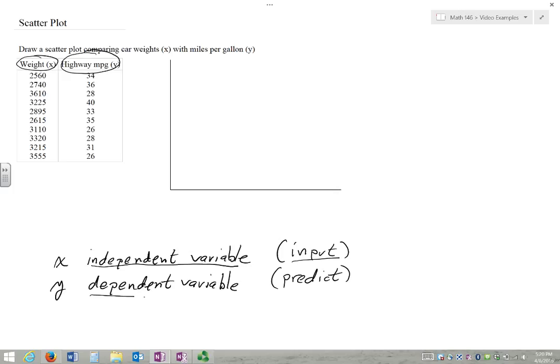Whereas the Y is our dependent variable because that's what we're trying to predict. We're trying to see if the weight of a car has a positive relationship on miles per gallon, a negative relationship, or possibly no relationship at all.